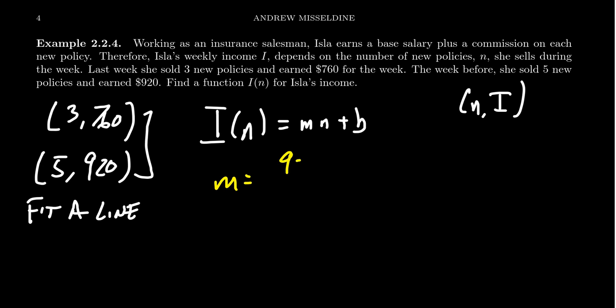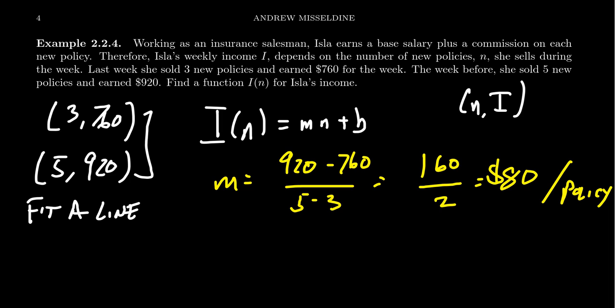So the slope here, m, we're going to take nine hundred and twenty minus seven hundred and sixty divided by five minus three. Nine hundred and twenty take away seven sixty, that should be one hundred and sixty. And then five take away three is a two. And so this tells us that her commission is going to be eighty dollars per policy that she sells. She gets eighty bucks for every policy she sells.